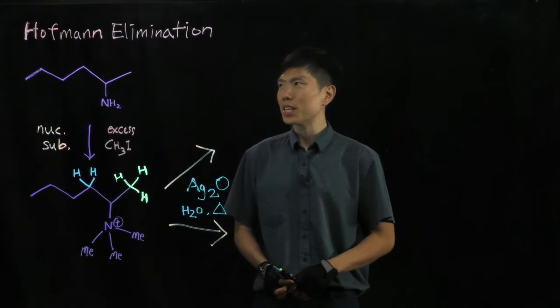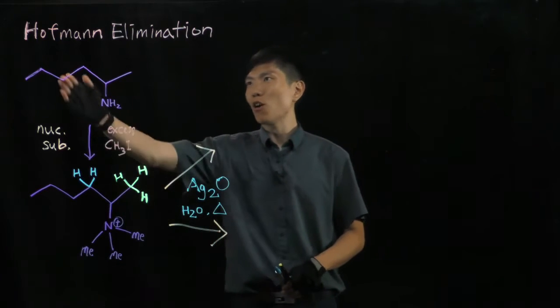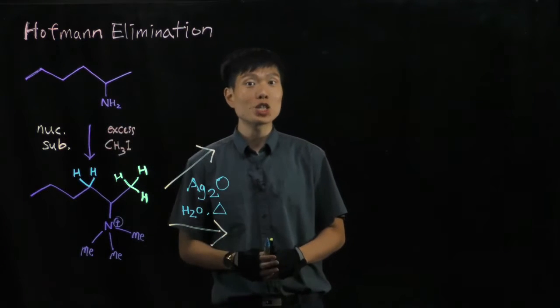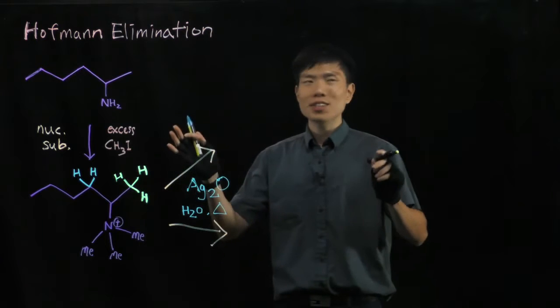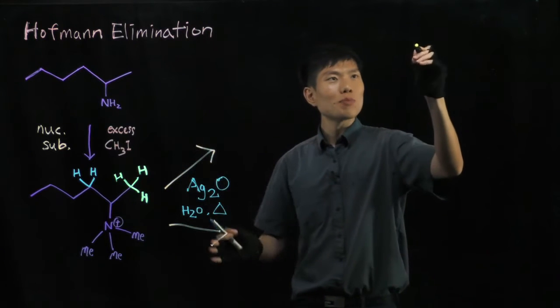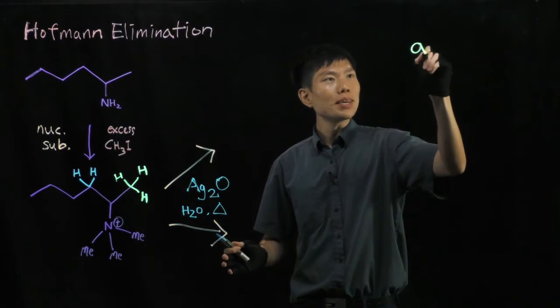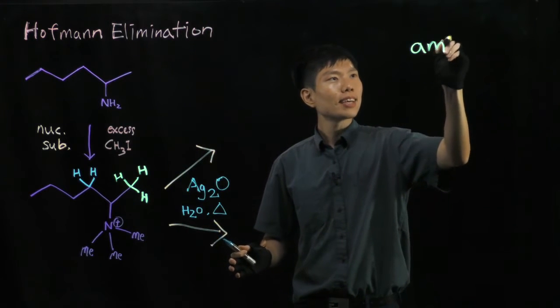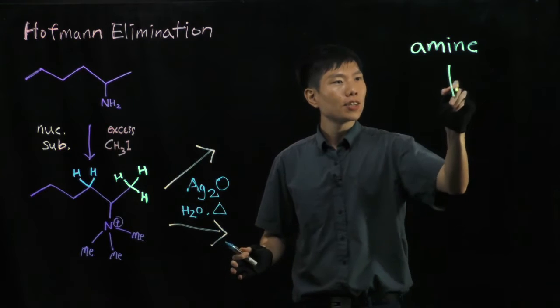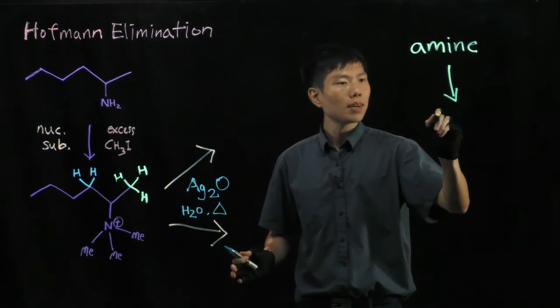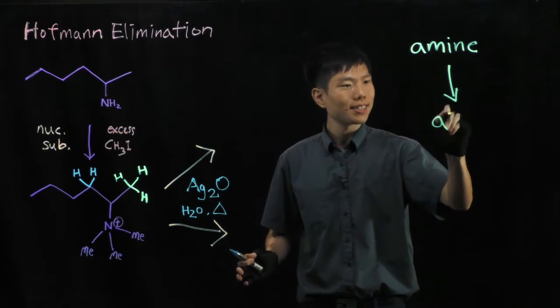Over here you'll be learning about the Hoffman elimination. In this case you must begin with an amine, and after that you will form an alkene.